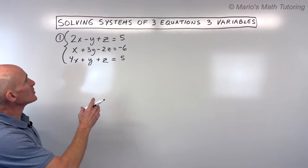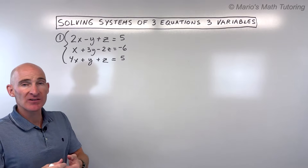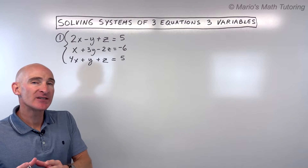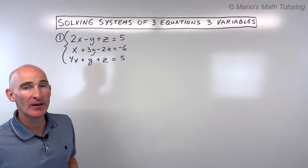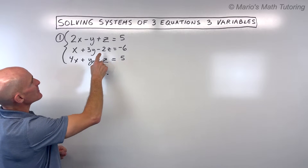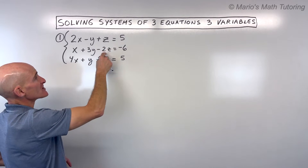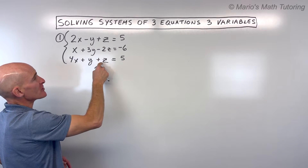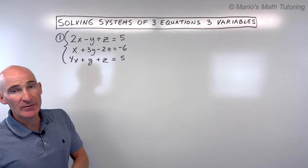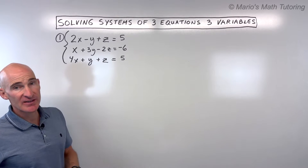What we're going to do is start by picking a variable to eliminate. You can eliminate either the x's, the y's, or the z's. Now when you pick a variable, stick with that variable — you'll understand what I mean in just a second. I'm going to look at the first and second equation. You can combine the first and second, the first and third, or the second and third, but you want to pick a variable to eliminate. I'm going to go with the z's — I think that's going to be easiest in this problem.